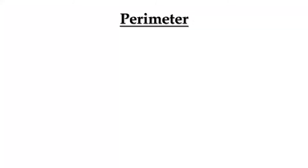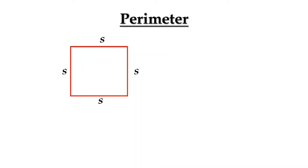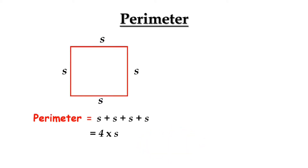What is the perimeter of any figure? The perimeter of any figure is the length of the boundary of the figure. Let us consider each side of this figure is S. So, the perimeter of a square is S plus S plus S plus S, which means 4 times S. The formula for the perimeter of a square is 4 times the side.